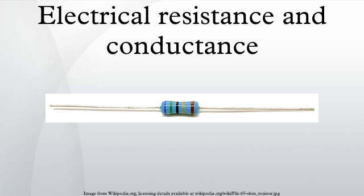The resistance R and conductance G of a conductor of uniform cross-section can be computed, where L is the length of the conductor measured in meters, A is the cross-sectional area of the conductor measured in square meters, σ (sigma) is the electrical conductivity measured in Siemens per meter, and ρ (rho) is the electrical resistivity of the material measured in ohm-meters. The resistivity and conductivity are proportionality constants, and therefore depend only on the material the wire is made of, not the geometry of the wire. Resistivity and conductivity are reciprocals. Resistivity is a measure of the material's ability to oppose electric current.